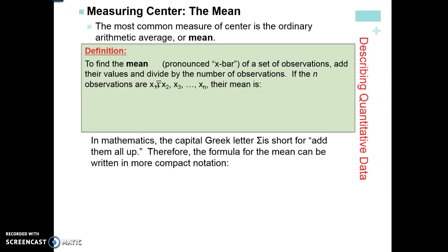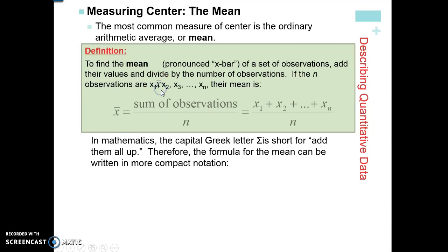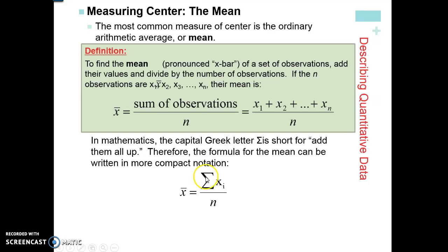The first thing we're going to talk about is the measure of center called the mean. The mean is the most often used measure of center — it's what you will be using most of the time in AP Statistics. To find the mean, you're literally just adding up all of the values and then dividing by how many you have. Notice we have x-bar here, which is notation telling us we have a sample. The Greek capital letter sigma means add them all up, so the mean equals the sum of all individual values divided by how many you have.